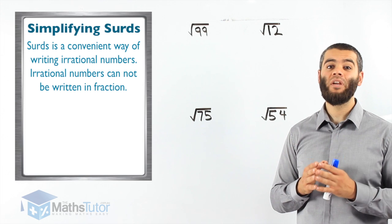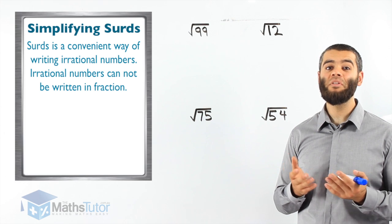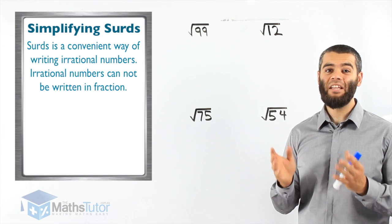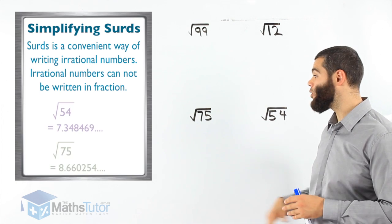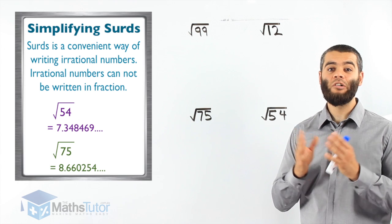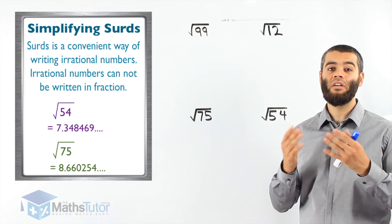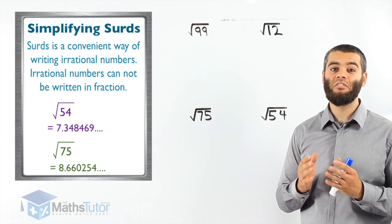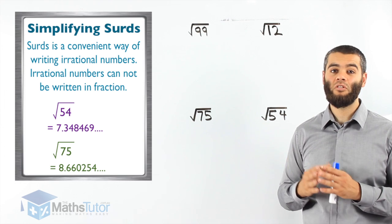Surds are a convenient way of writing irrational numbers. Irrational numbers are numbers that can't be written as a fraction. In fact, they are long answers. If you put any of these in your calculator — square root 54, square root 75 — you're going to get a long answer that's not even repeating, nor does it terminate. It just keeps going.